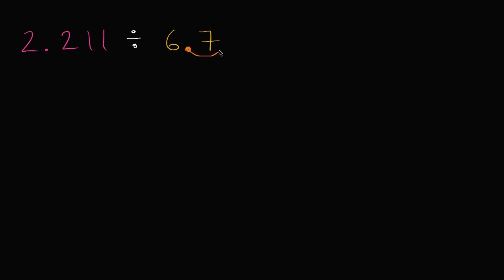which is essentially just taking this decimal and moving it one space to the right. Well, I can't just do that to the 6.7, I also have to do that to the 2.21. So let me move its decimal one space to the right.